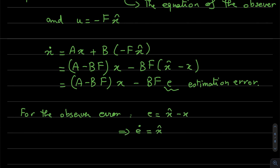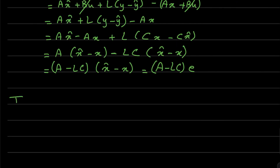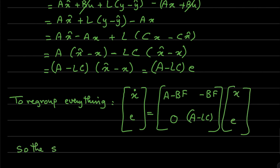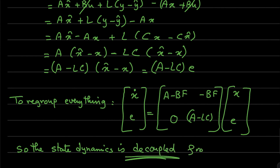I will use the equation of the observer, where e is the difference between the estimation and the real state. I will study the dynamics of this error and replace all the equations in this expression, including Ax plus Bu, and find that e_dot — not e — means the state dynamics is decoupled from the estimation error dynamics.